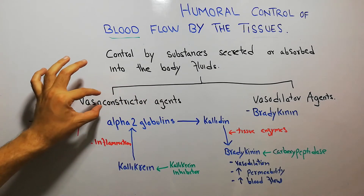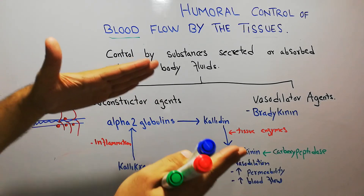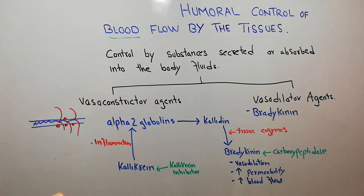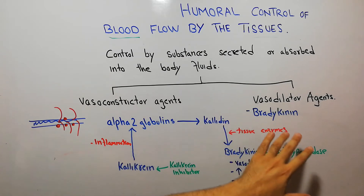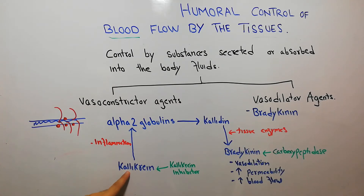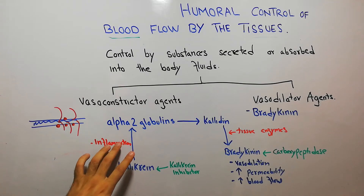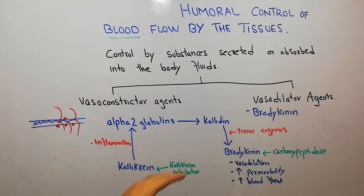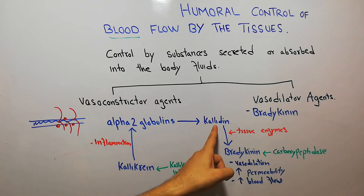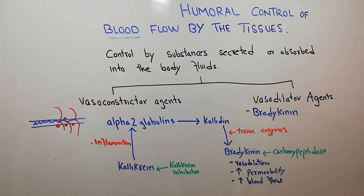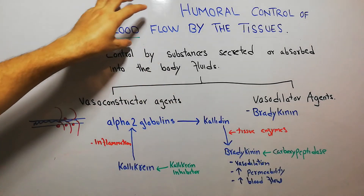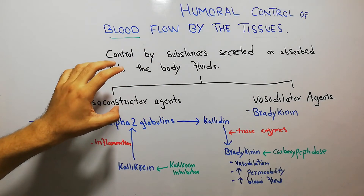Whereas vasoconstrictor agents controlled blood flow through vasoconstriction, bradykinin increases blood flow through vasodilation. To summarize its formation: inactive kallikrein gets activated by inflammation, acts on alpha-2 globulin to form kallidin, and tissue enzymes then act on kallidin to form bradykinin. Bradykinin then causes vasodilation, increased permeability, and increased blood flow at the site of inflammation, thereby regulating blood flow.